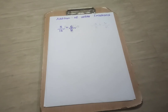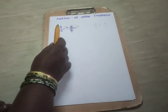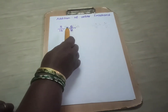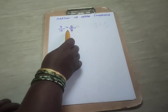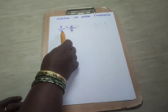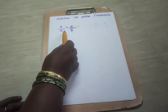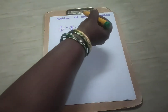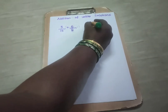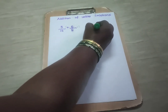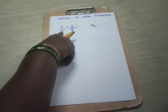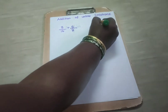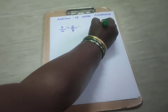Now let us see how to do the addition. In this case, that is if the denominators are different, we have to find the LCM. So here you have to find the LCM for the denominators 16 and 8.